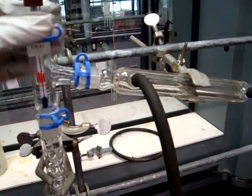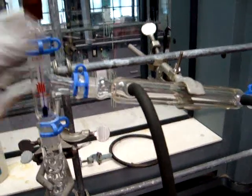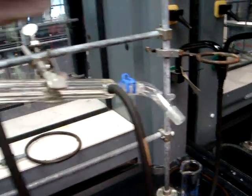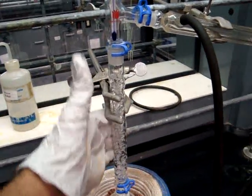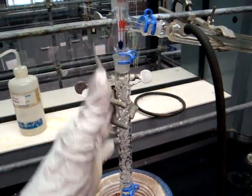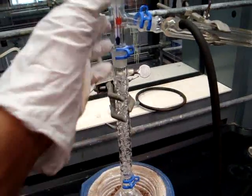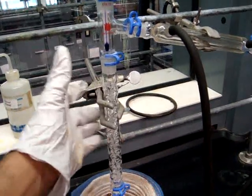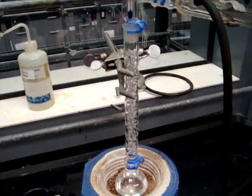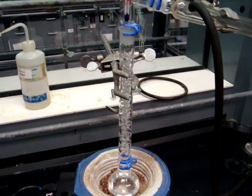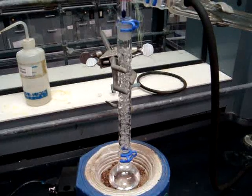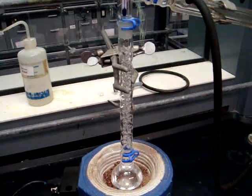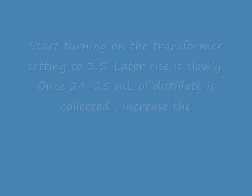Your entire apparatus needs to be clamped in all places and secured tightly to the bench. As you can see, this is the fractionating column setup — you'll be wrapping the fractionating column in cotton and then wrapping aluminum foil around that to insulate the system so that you do not lose any heat.